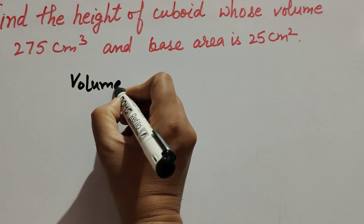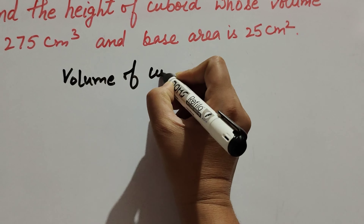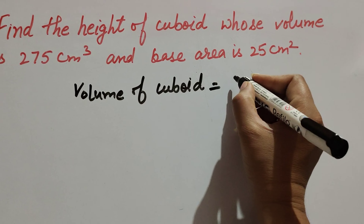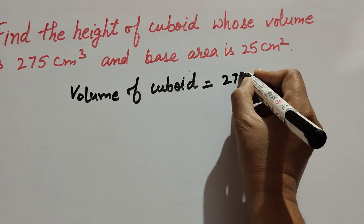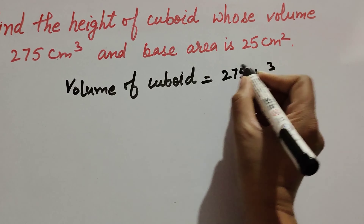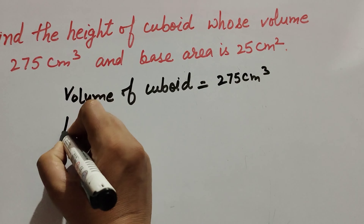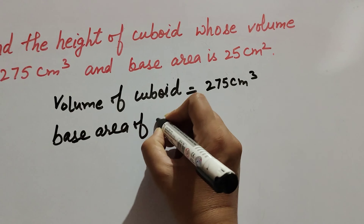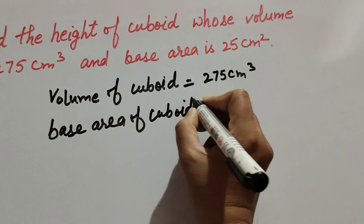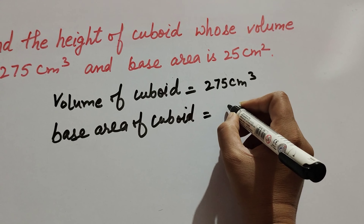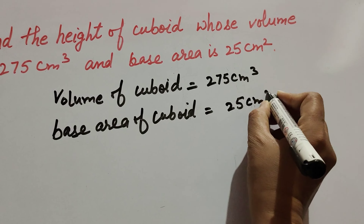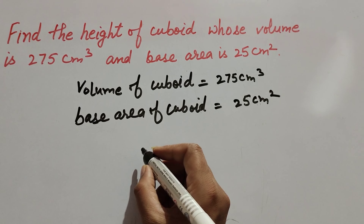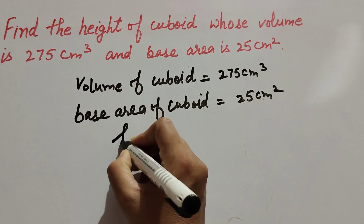Volume of cuboid is given — it is equal to 275 centimeter cube. Base area of the cuboid is given — base area of cuboid is equal to 25 centimeter square. So we have to find the height of the cuboid.